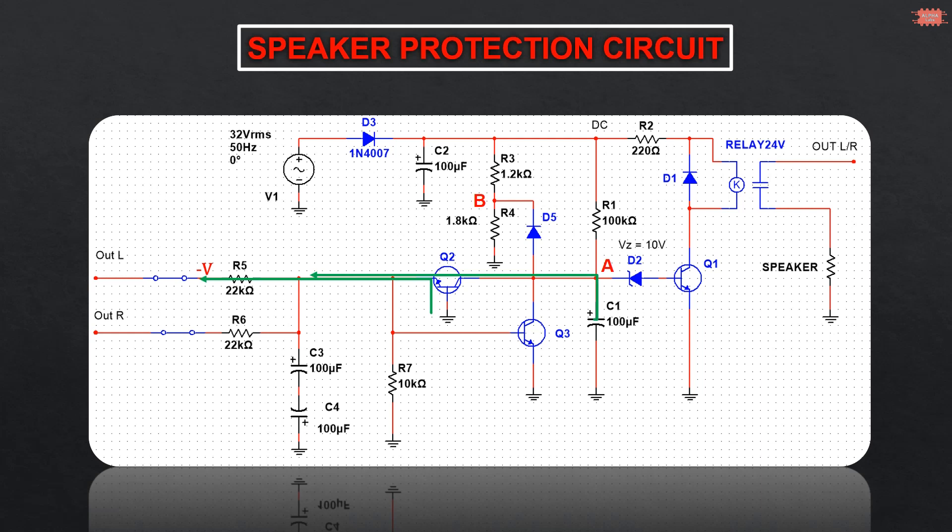Next, the capacitors C3 and C4 are used to bypass AC signals. If we don't have these two capacitors, transistors Q2 and Q3 will be biased when even a little AC voltage appears at the speaker output.